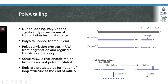RNAs that encode histone proteins do not undergo polyadenylation. These RNAs can be protected from degradation by forming a loop structure at the end of the RNA molecule. It is important to note that not all mRNAs are poly-A tailed.